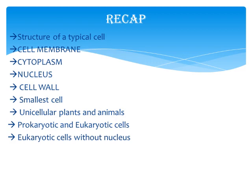We also discussed the cell wall. Cell wall is present only in plant cells — it is outside the cell membrane. So in a plant cell, the first layer is the cell wall, then the cell membrane, and then the rest of the contents. Cell wall is a non-living structure and it is freely permeable — anything can come in or go out.